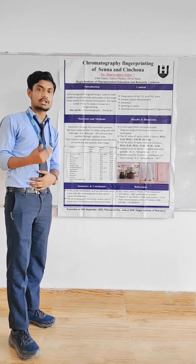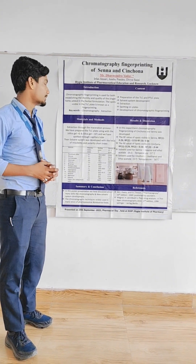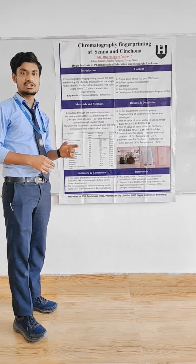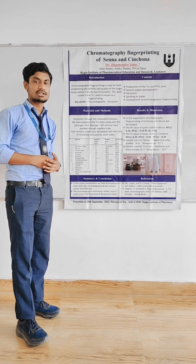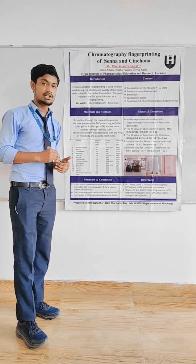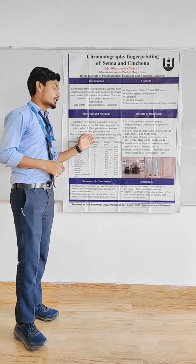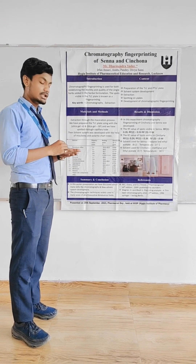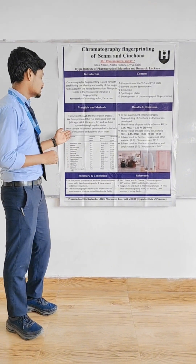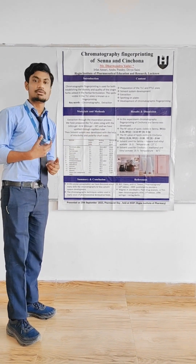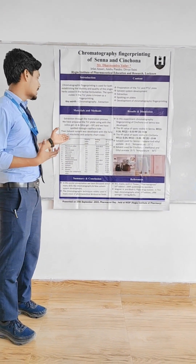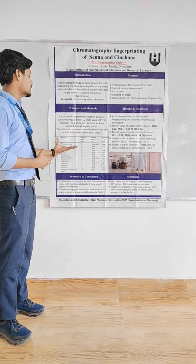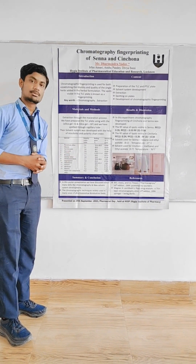We filtered the chemical extracts and then we made a TLC plate with silica gel. The silica gel was used so that the fingerprinting will be visible. Then we took a capillary tube and applied the sample 1 cm from the bottom of the TLC plate. Then we observed the spot. The solvent system, also known as the mobile phase, was developed with the help of a building chart and a polarity chart. This is how we developed our solvent system.